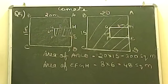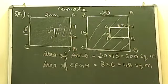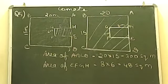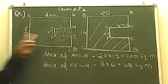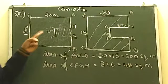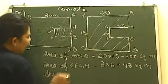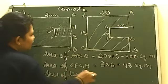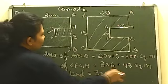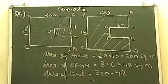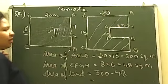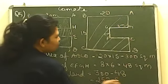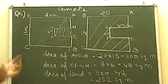What should be the next step? If we remove this smaller portion from the larger one, we will be left with the same figure given in the question. So the area of the land is equal to 300 minus 48. Subtracting gives us 252 square meters.